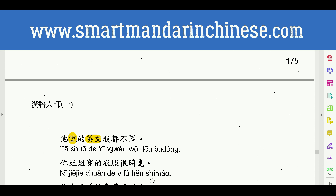你姐姐穿的衣服很时髻. 时髻 means fashionable. So what is the verb object? If you are sensitive enough, you know the verb object is just right next to 的. 穿衣服 is the verb object — wear clothes — because they are next to 的. So the clothes your older sister is wearing are very fashionable. 你姐姐穿的衣服很时髻.